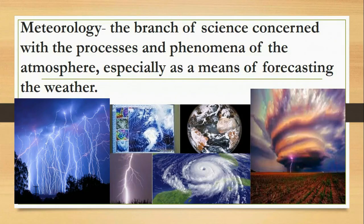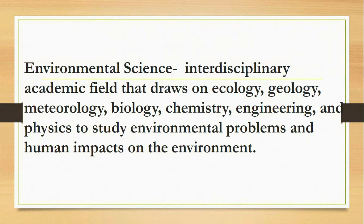Environmental science is defined as an interdisciplinary academic field that draws on ecology, geology, meteorology, biology, chemistry, engineering, and physics to study environmental problems and human impacts on the environment. It is important because it enables you to understand how these relationships work.